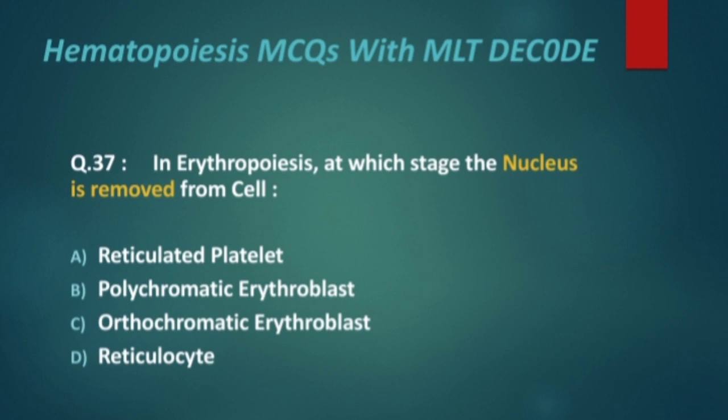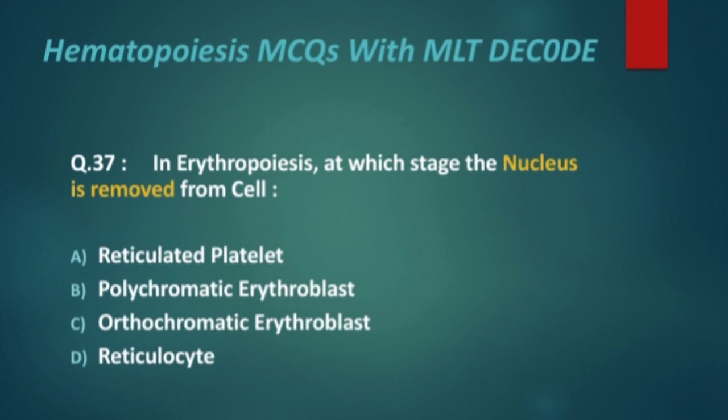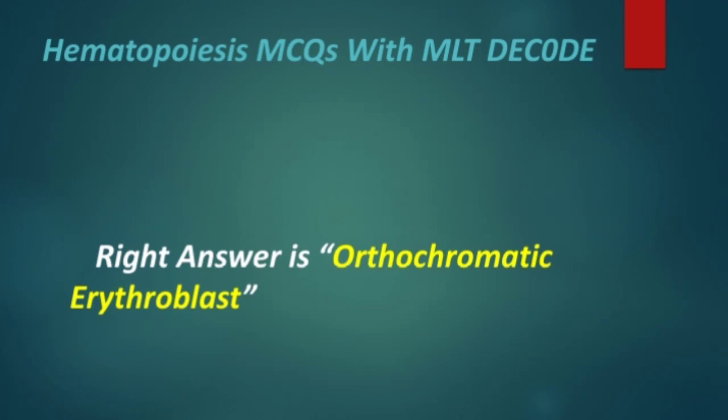Next: in erythropoiesis, at which stage is the nucleus removed from the cell? Options are: reticulated platelet, polychromatic erythroblast, orthochromatic erythroblast, and reticulocyte. The right answer is orthochromatic erythroblast.